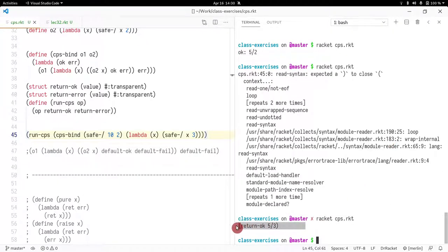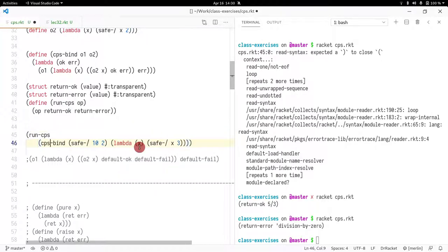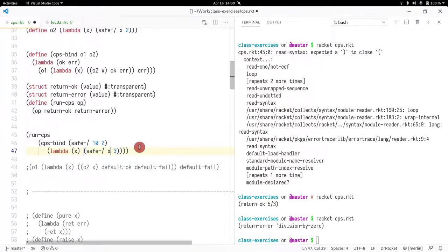So if instead of doing that, I just do run CPS and this parenthesis. As you can see here, it created this struct return OK with five thirds. So if I do zero here, division by zero. OK, which is what we want. So what are we running? We did the bind. This would be the continuation. So this is one example.